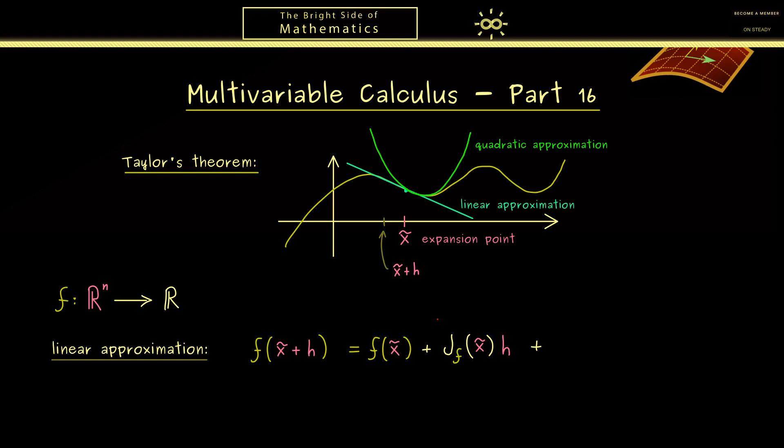Ok, then how good this approximation is, is usually measured with an error term φ. So we have φ of h with the property that it goes fast to zero when h goes to zero. More precisely, φ of h divided by the norm of h goes to zero when h goes to zero. So please don't forget, this is essential, such that this term here is the linear approximation for the function f at the expansion point x tilde.